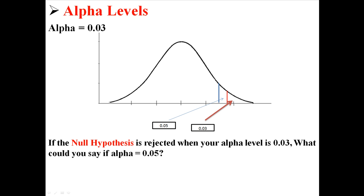So the first question is, if the null hypothesis is rejected when your alpha level is 0.03, what could you say if alpha is 0.05? Now, just looking at that graph, realize if you're rejecting at 0.03, that means you have a point to the right of that red line. So that definitely means you have a point to the right of that blue line. It encompasses all of the areas. So in this case, you would reject the null hypothesis. If you're rejecting at 0.03, you have to reject at 0.05 as well.